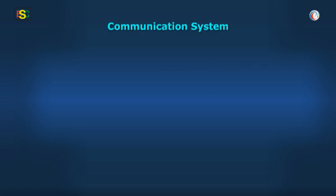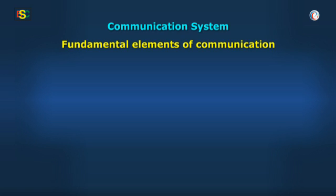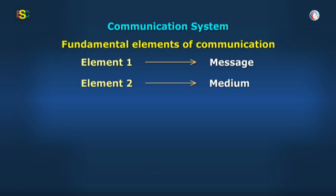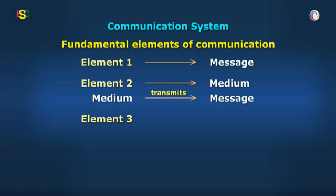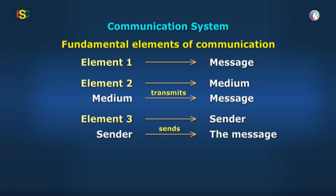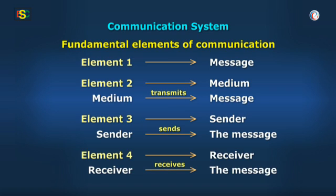First, you need to understand the fundamental elements which are involved in any communication procedure. First element is the message itself, which will be transmitted over the communication channel. Second element is the medium through which the message is transmitted. It can be wires or a wireless medium. Third element is the sender, the entity responsible for sending the message over the medium. Fourth element is the receiver, which is found at the end of the communication medium and receives the message transmitted.